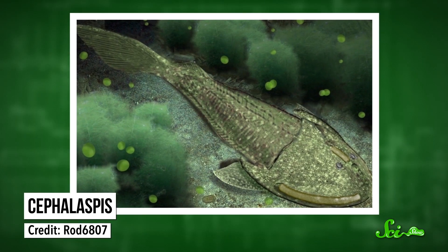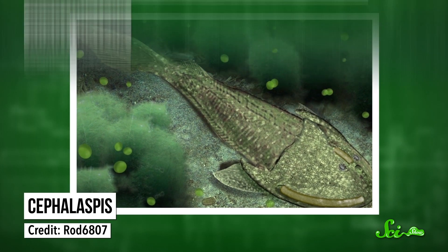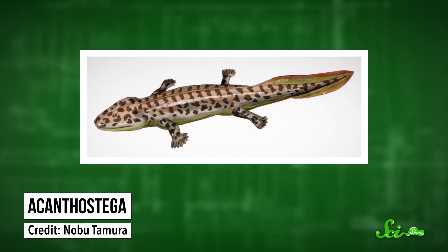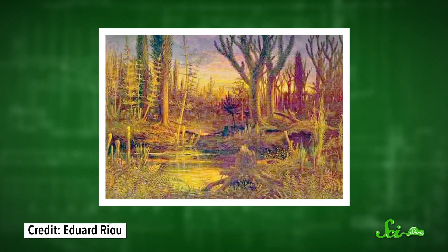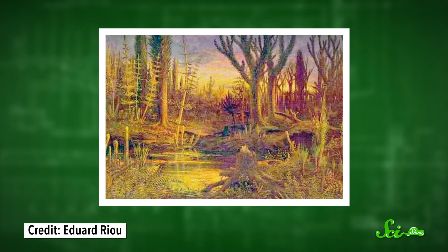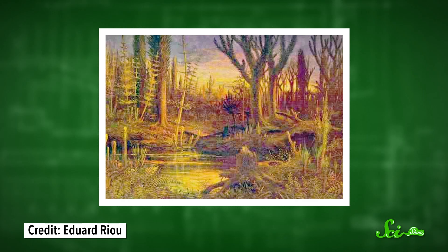At the beginning of the Devonian, jawless vertebrates were the most complex life around. By the end of the Devonian, there were early amphibian-like land dwellers walking around. That is a gigantic leap. Arthropods and land plants had a huge boom, too, meaning those simple land-based ecosystems from the end of the Silurian were a lot more complex by the end of the Devonian.